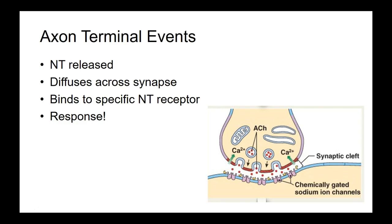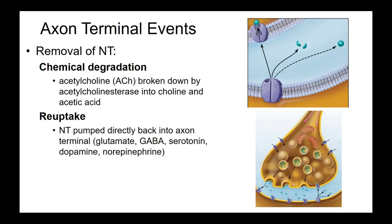To get information from the presynaptic to the postsynaptic cell, we need this series of events. From the motor neuron to the skeletal muscle cell, the neurotransmitter used is acetylcholine. The skeletal muscle cell therefore has the acetylcholine receptor, which is a ligand-gated ion channel.